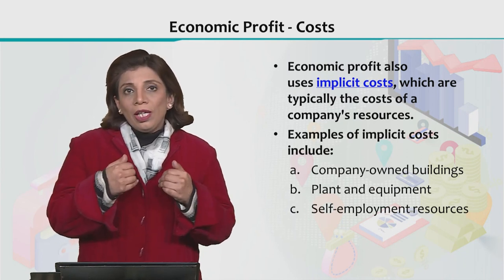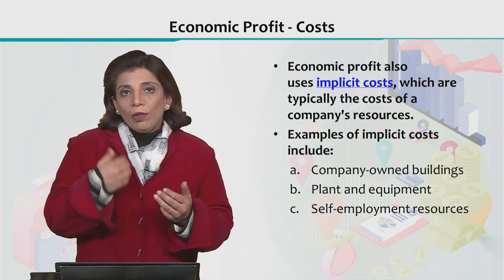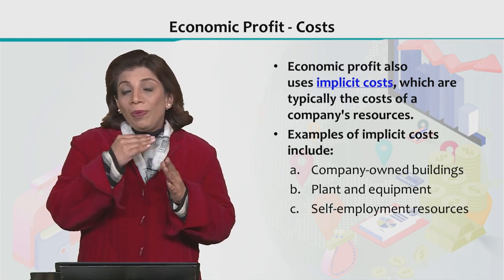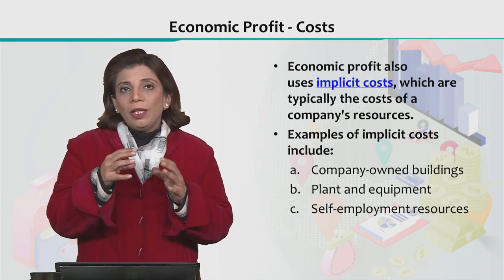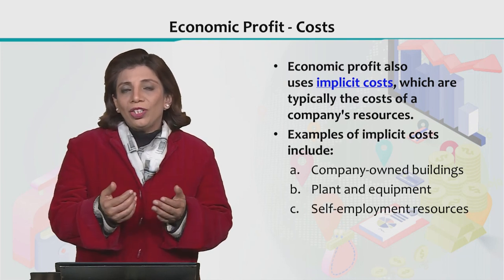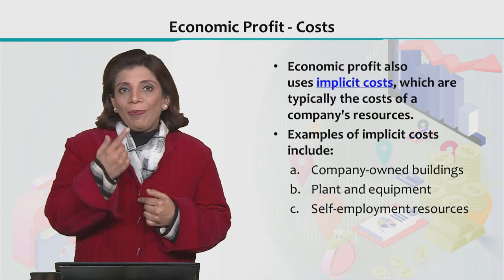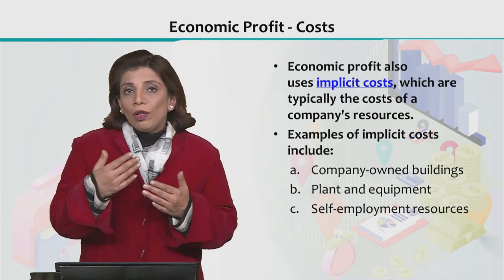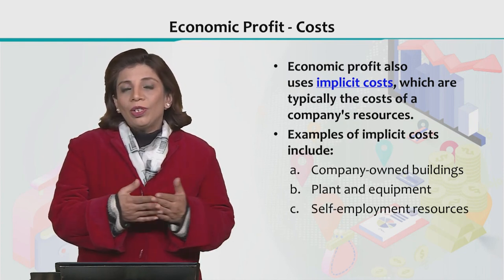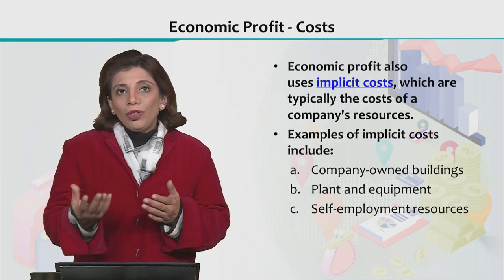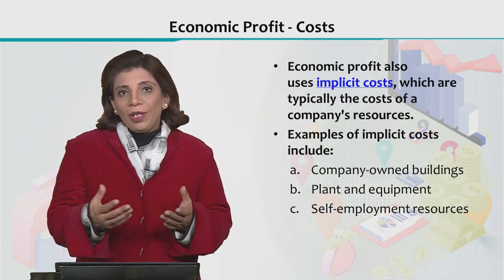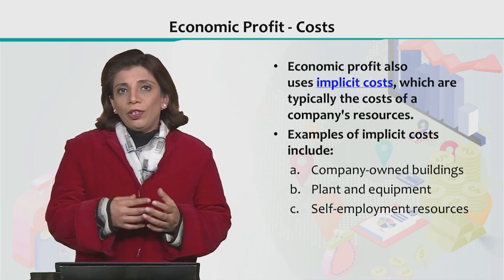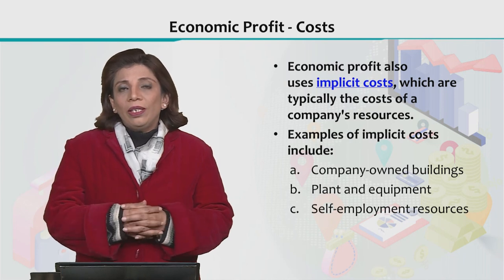Another example: if you yourself work in your own company, the implicit cost is what you would have paid to hire someone of equivalent qualification and experience, or alternatively, what you would have earned by working at another organization. That foregone salary represents the opportunity cost. These are the different forms of implicit cost that are to be considered in order to calculate the economic profit.